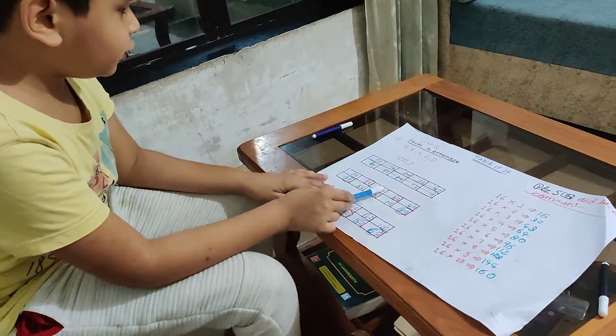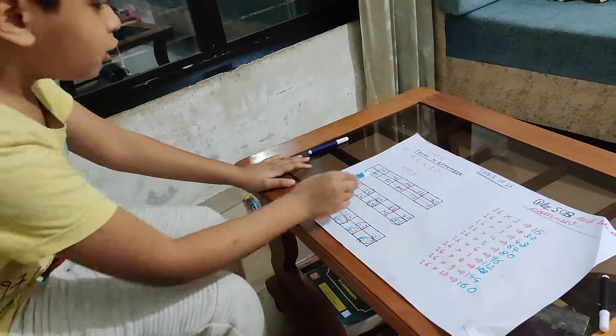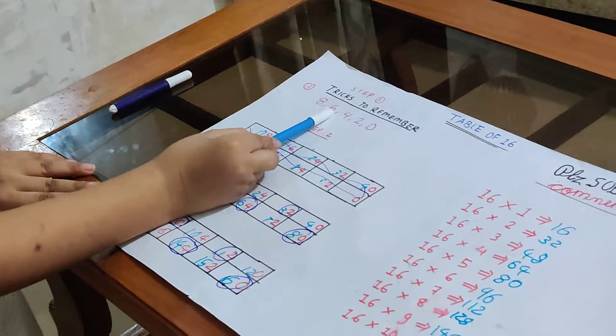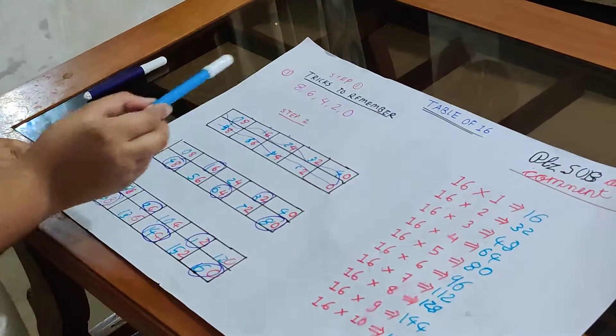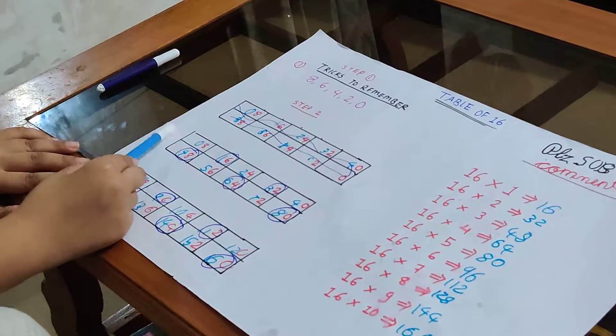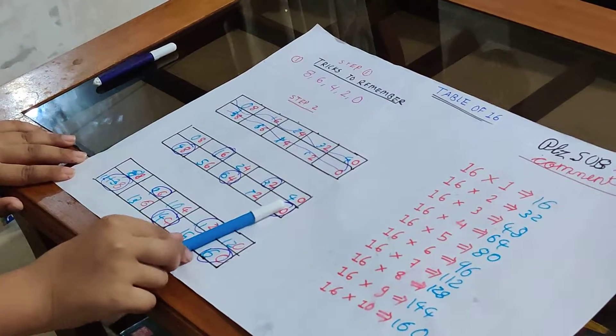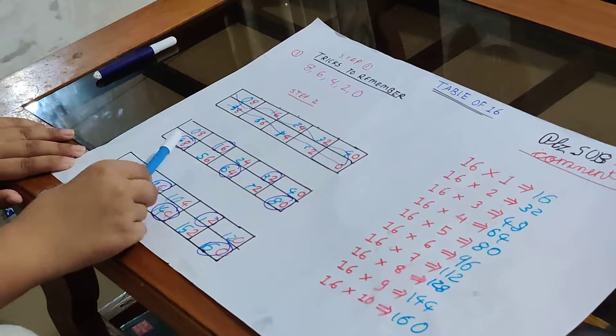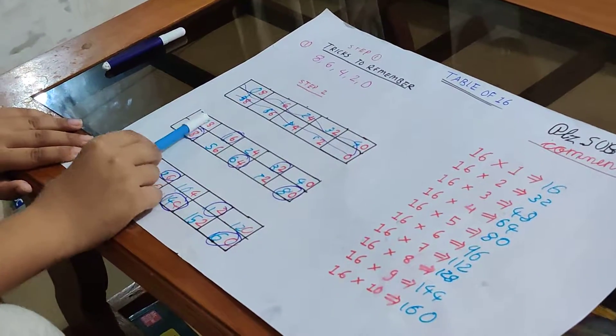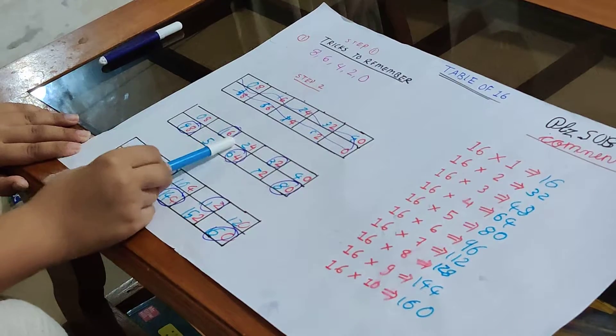So then we repeat the process. Step one: 8, 6, 4, 2, 0. Step two: write two columns, not three, and then write 8, 6, 4, 2, 0.